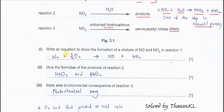Part B1: Write equations to show the formation of a mixture of NO and NO₂ in reaction one. The reactants are the nitrogen molecule and oxygen, which form the two oxides. You need to balance the oxygen, so you put 3/2 to ensure the elements are balanced on both sides.